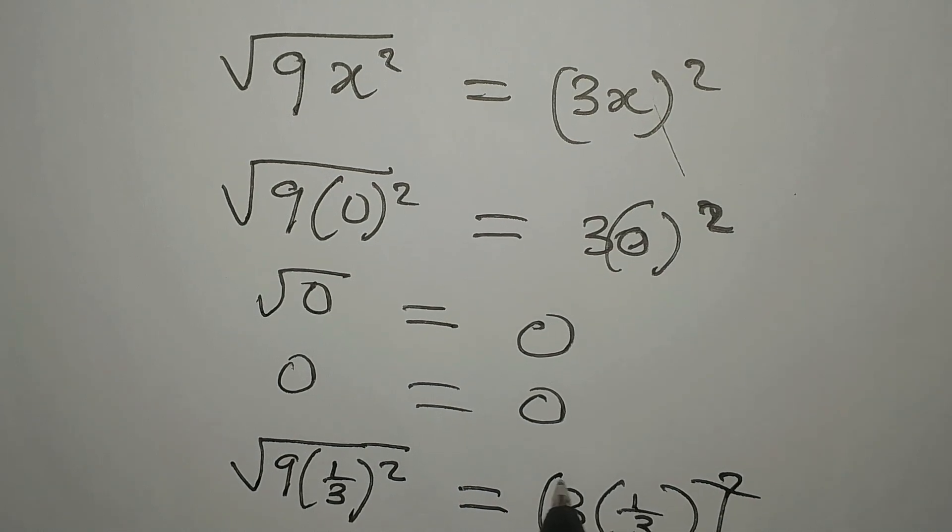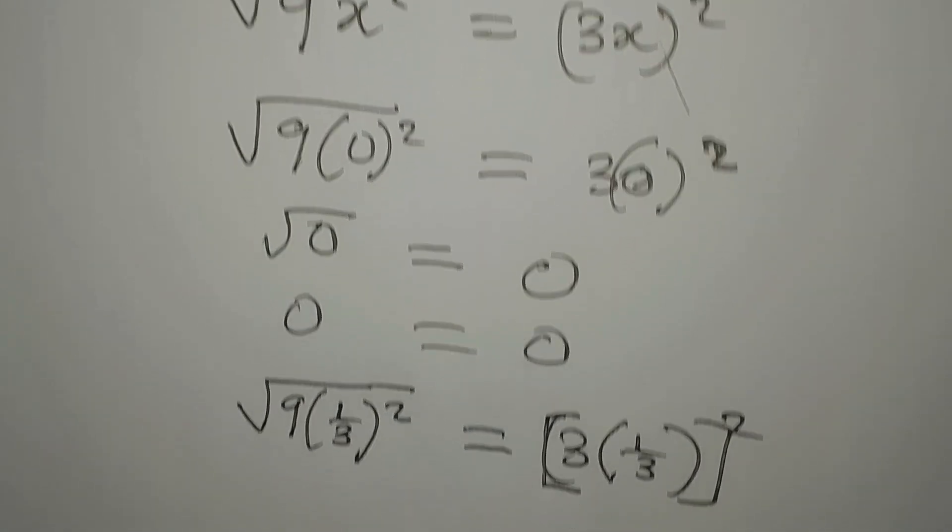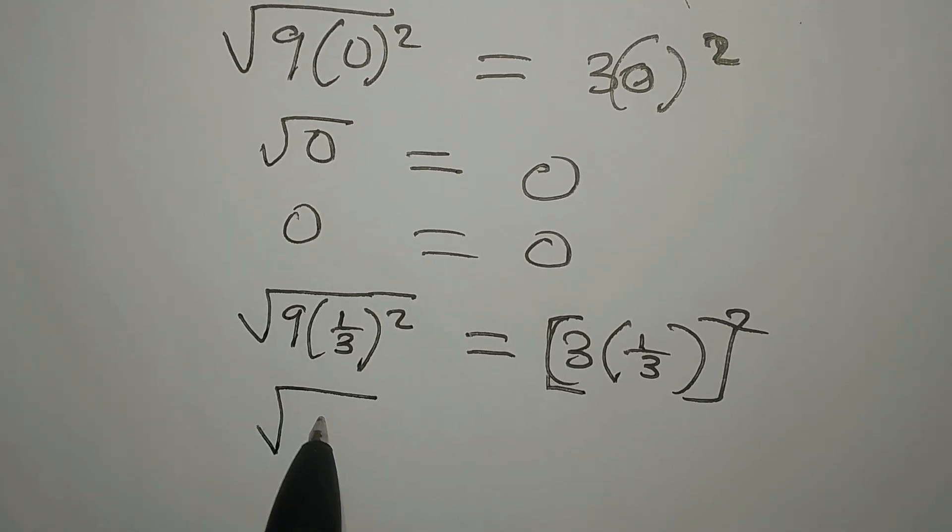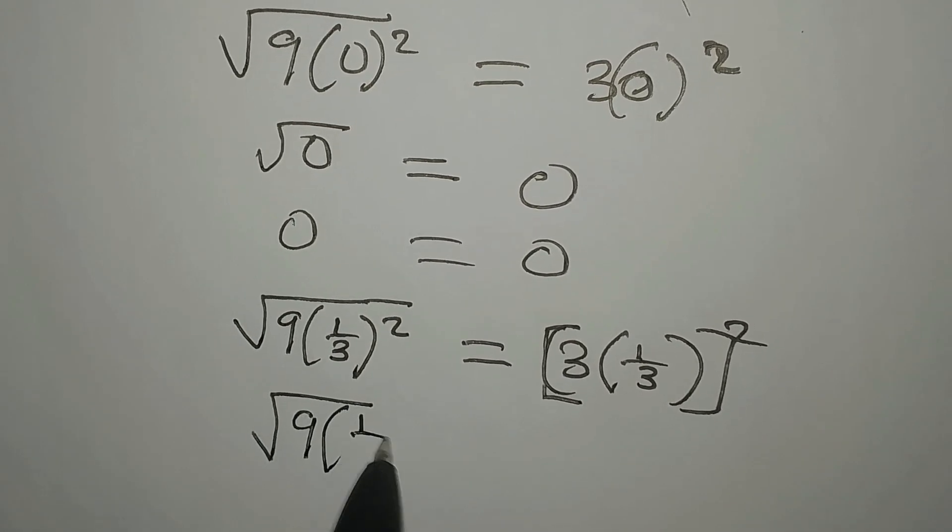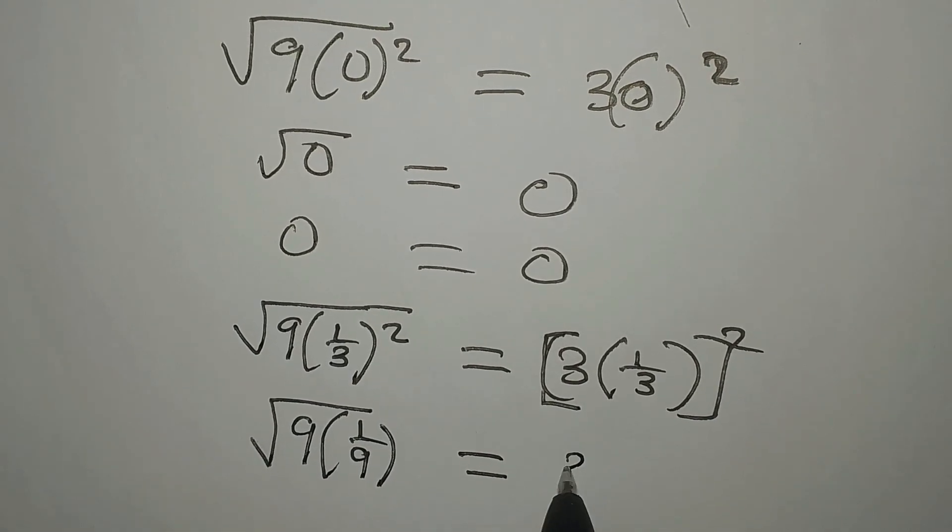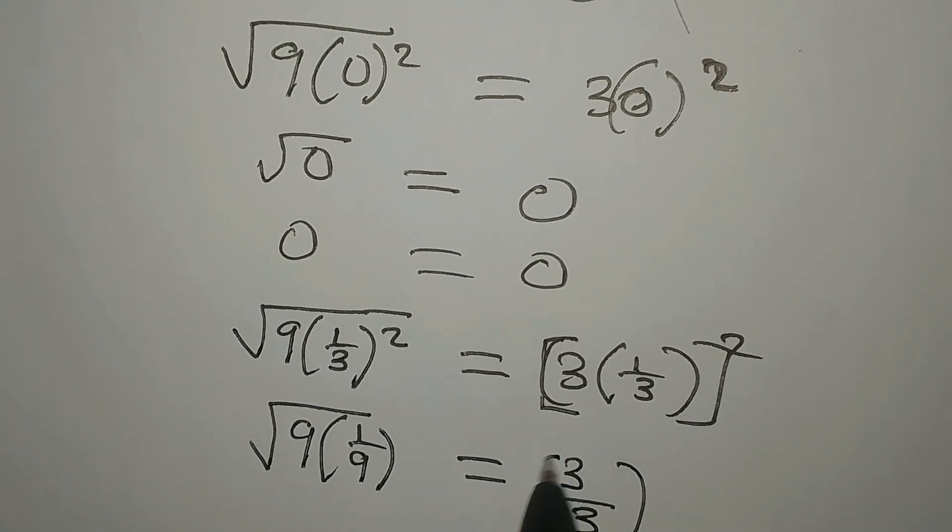We're going to square what we have here, so we have square root of 9 into 1 over 9 equal to 3 over 3 to the power of 2. 3 over 3 is 1, and 9 into this is also 1, so we're having square root of 1 equals 1 squared.